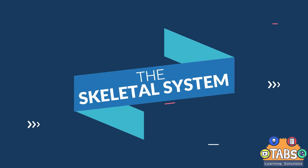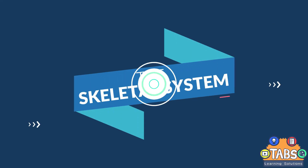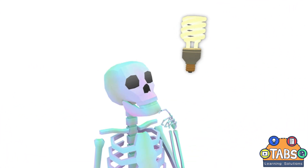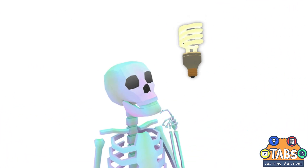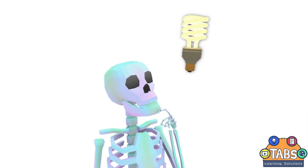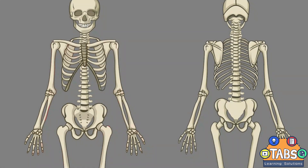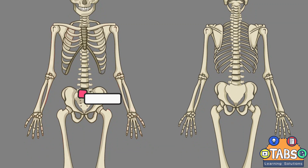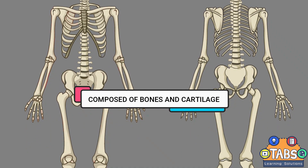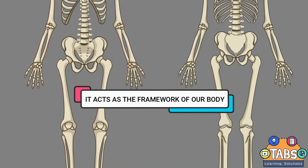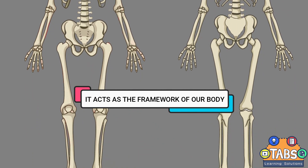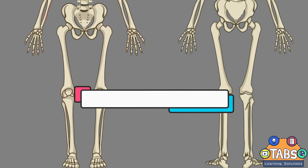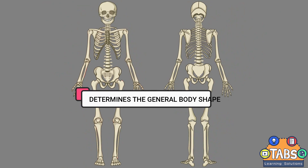The Skeletal System. In this video, you will learn the different parts of the skeletal system and its functions. The skeletal system is the body system composed of bones and cartilage. It acts as the framework of our body and it determines the general body shape.